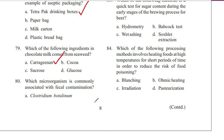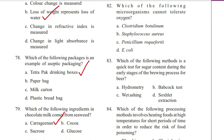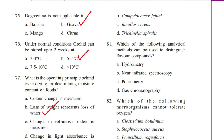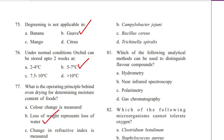Question 80. Which microorganism is commonly associated with poultry contamination? A. Clostridium botulinum, B. Campylobacter jejuni, C. Bacillus cereus, D. Trichinella spiralis. Answer B. Campylobacter jejuni.